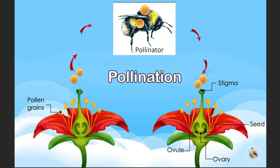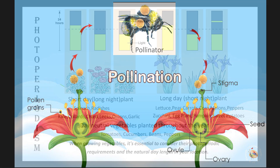6. Pollination: many vegetable plants require pollination to produce fruits. Pollination is the transfer of pollen from the male part (stamen) to the female part (pistil) of a flower. This can occur through wind, insects, or other animals. Without proper pollination, some vegetables may not produce fruit.